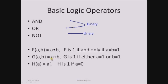So g(a, b) = a OR b. The output of this function is one when both operands are one, or when any of the operands is one. If both operands are zero, then the output is zero. For the NOT operator: h(a) = a complement, where the complement symbol represents NOT. It operates only on a single variable, which is why it is called a unary operator. The output of this function is one when the value of a is zero.